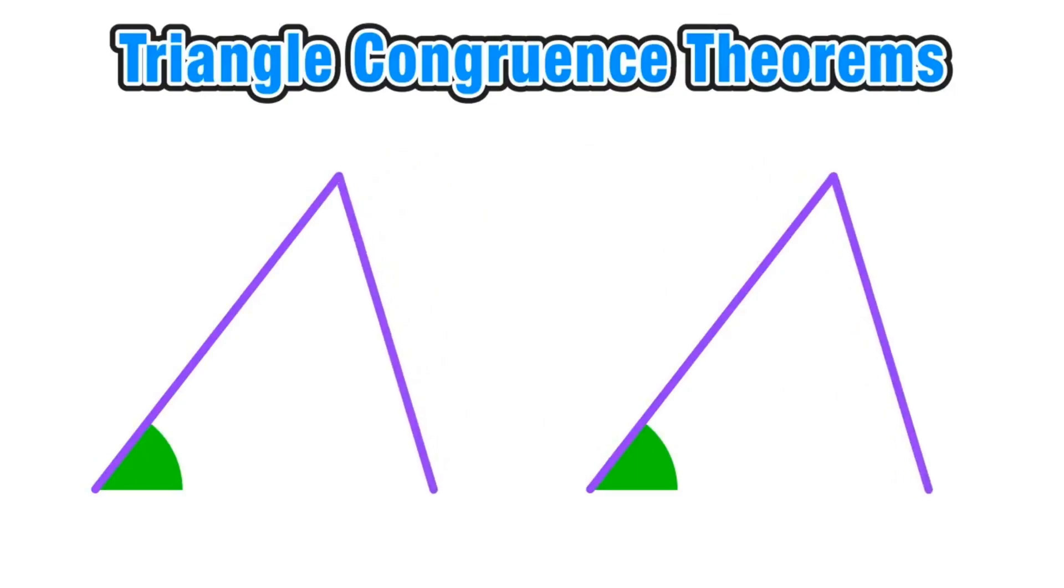The issue is with that second congruent side. Since we don't know the angle in between the two congruent sides, we don't exactly know its position. So I could take that side and swing it over to a new location.